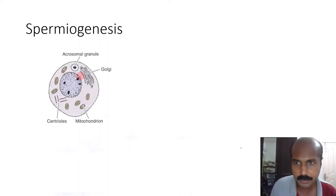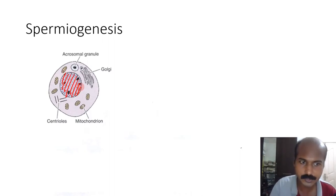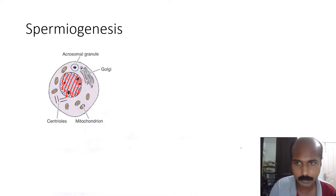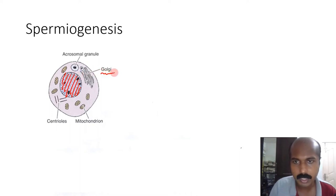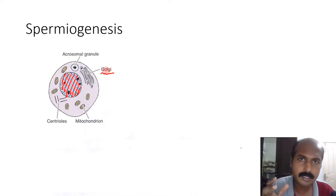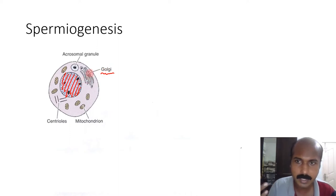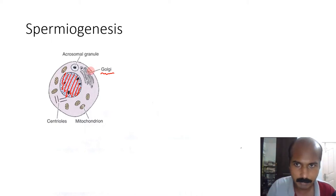The spermatid has a central round nucleus — this is not the structure of a spermatozoon. We will learn how this changes into a spermatozoon. It contains various organelles, the first of which is the Golgi complex — the packaging center of the cell — which synthesizes and packets enzymes to specific destinations.